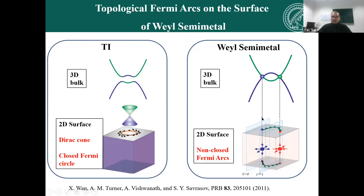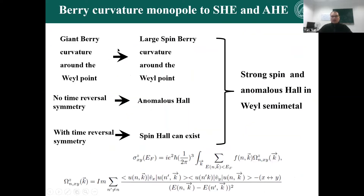From one Weyl point, the Fermi arc goes to the opposite surface. So these surface states are different from traditional topological insulators. From the bulk properties, because it has giant Berry curvature, if we project the Berry curvature into spin space, it can also have a large spin Berry curvature. Together with the symmetry, we can expect a strong anomalous Hall effect in magnetic systems and a strong spin Hall effect in non-magnetic systems.